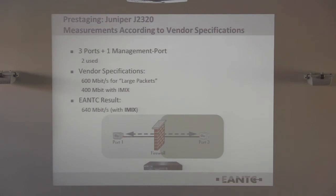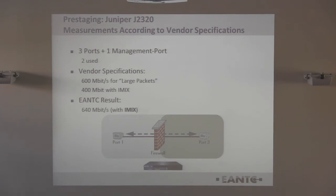The Juniper J-series device has four ports and a serial port. We used one port for web management access and two ports for traffic. The vendor said it can do 600 Mbps with large packets or 400 Mbps with iMix. One port pair was sufficient to achieve that. We measured 600 Mbps with our iMix — the vendor said 400 but we measured more, which was a nice surprise.